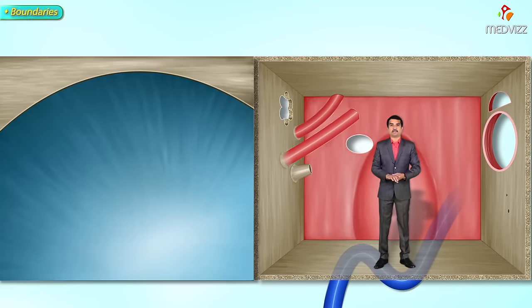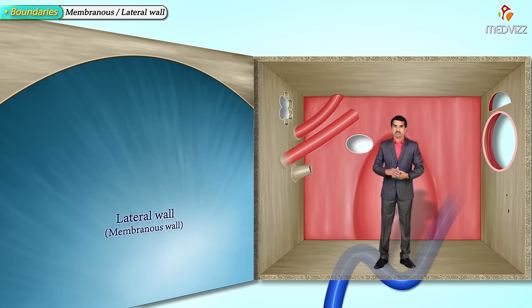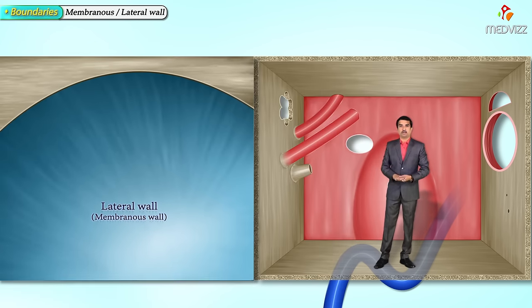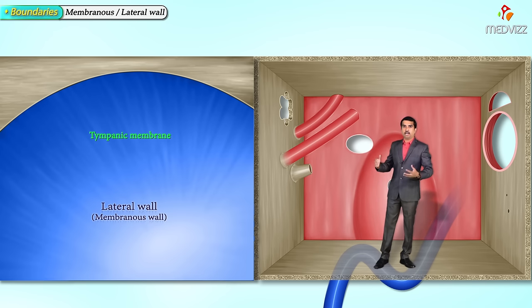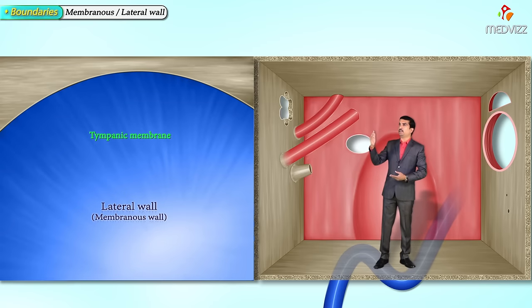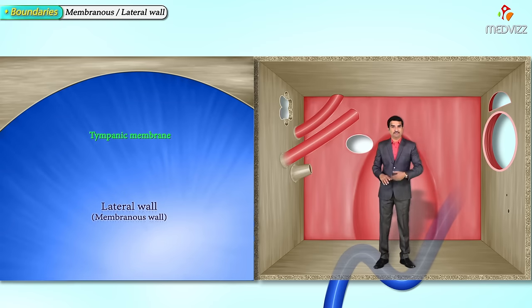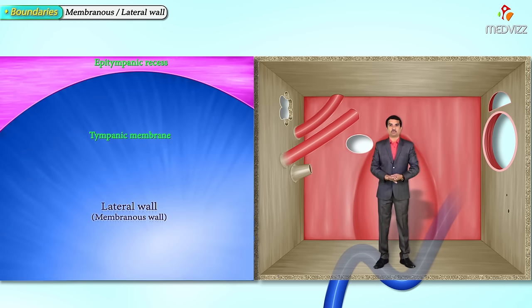The lateral wall is called the membranous wall. It is formed by a peaked convexity of the tympanic membrane and superiorly by the lateral bony wall of the epitympanic recess. So the tympanic membrane together with the epitympanic recess form the lateral wall of the middle ear cavity.